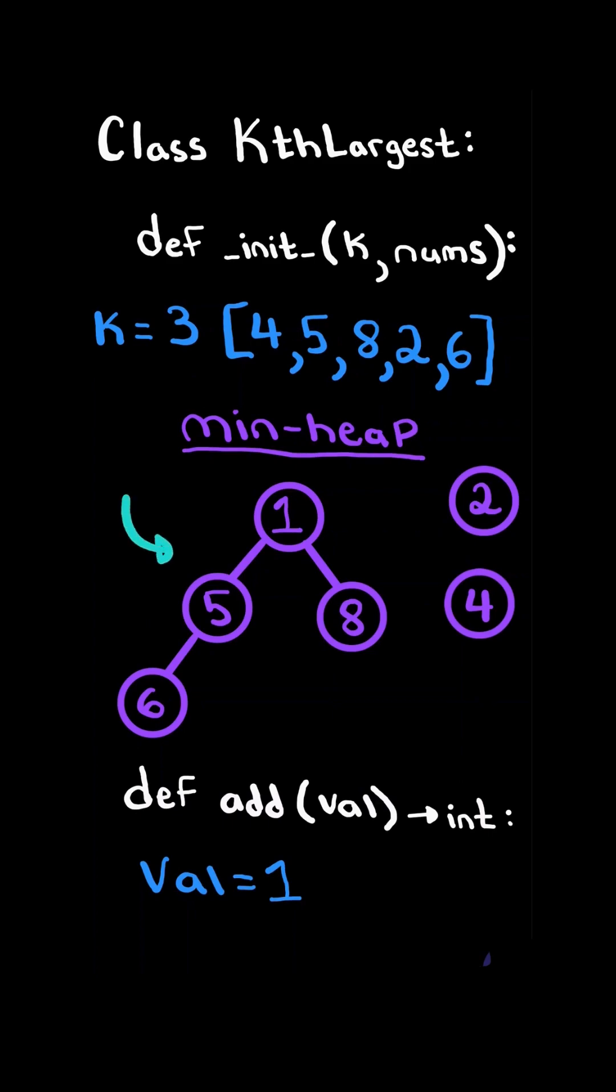Once again, if the number of nodes in the heap is greater than k, we pop from the heap and replace it with the last node in the tree. We then swap with the smaller of its children, and now the heap's properties are satisfied.